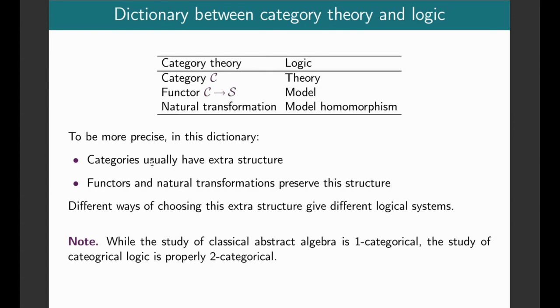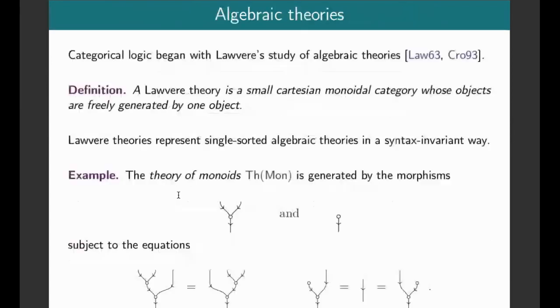This table is a bit misleading in that usually we're going to want the categories to have some extra structure, and it's precisely this choice of extra structure that will give us different logical systems. By equipping our categories with various kinds of extra gadgets, that's what will allow us to have different logics. And once we've done that, we'll want the functors and natural transformations to preserve this additional structure.